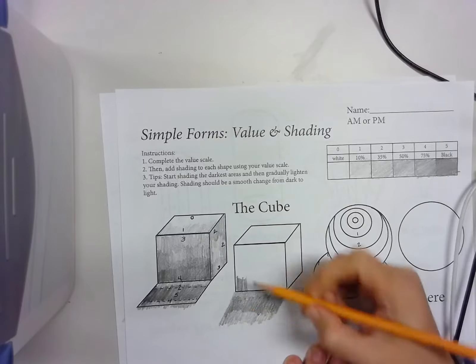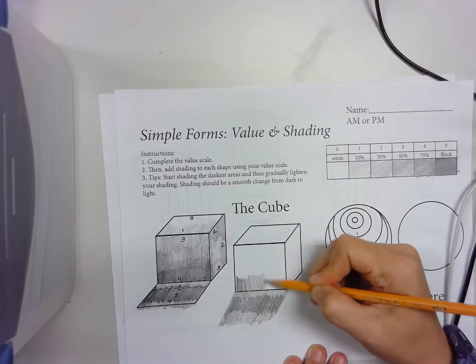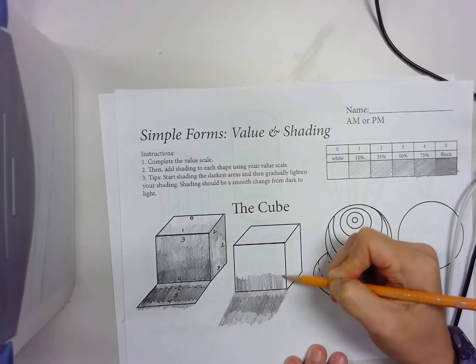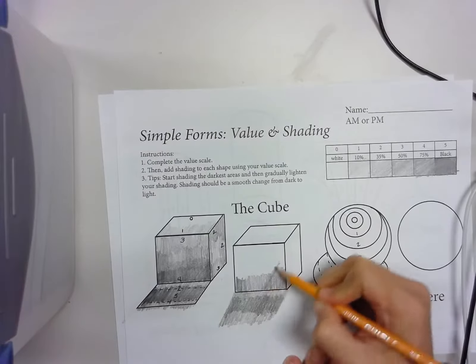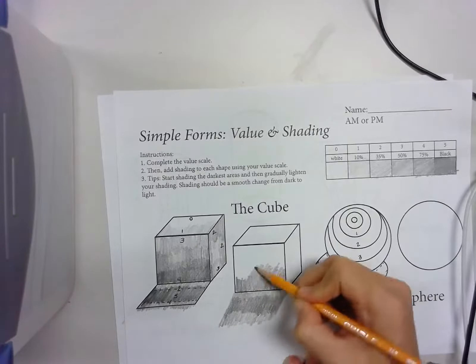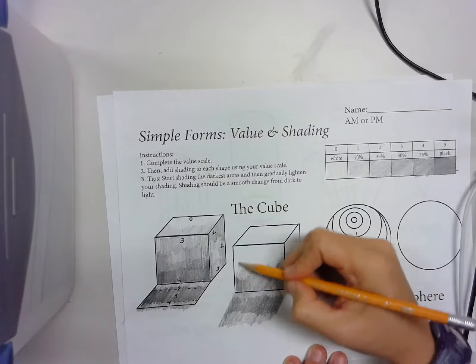Actually, 4 should be a little bit darker than that. If you have to look at your value scale again, double check. I'm going to have to go back over. I'm doing this very quickly, but you guys can do a much neater job.